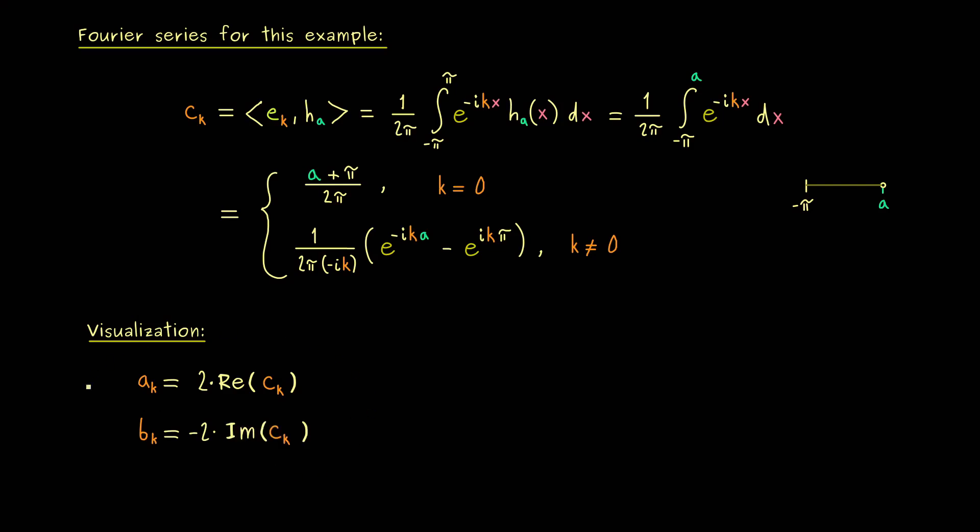And b_k you get as minus two times the imaginary part of c_k. Indeed, this is easy to check and may be helpful to remember because the real Fourier series might be better for plotting.